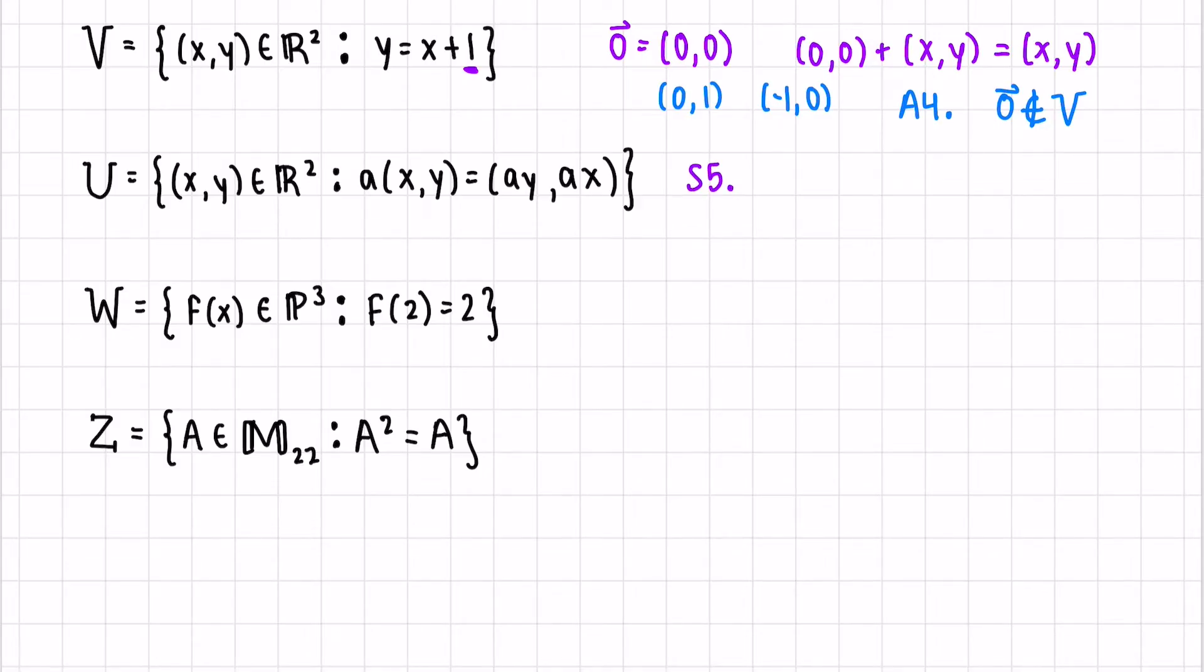The order of x and y switches when we multiply x and y by a scalar. S5 states that there has to be a unit vector. So if we multiply 1 times (x, y), we get back (x, y). And you can see that it's not true. If we multiply 1 times (x, y) because of this new rule, we'll get (y, x), which is not equal to (x, y).